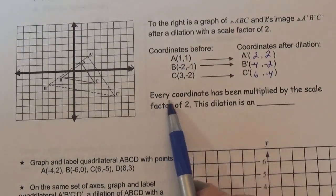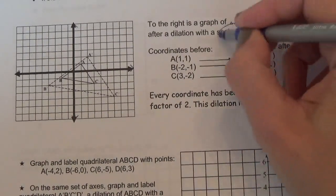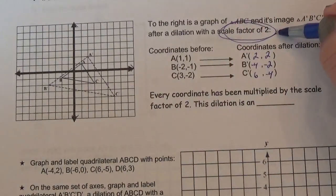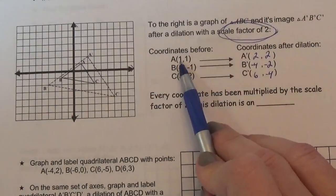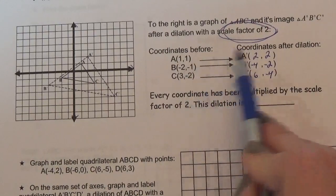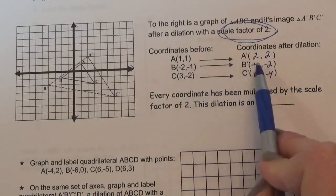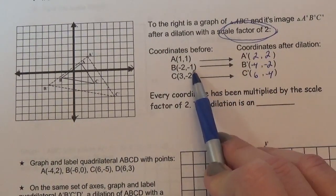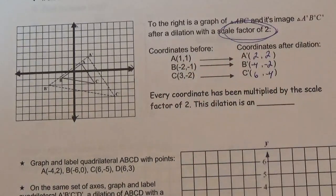Now if you notice, every coordinate has been multiplied by 2. It said the scale factor was 2. Look, 1 times 2 equals 2, 1 times 2, negative 2 times 2 is negative 4, negative 1 times 2 is negative 2.